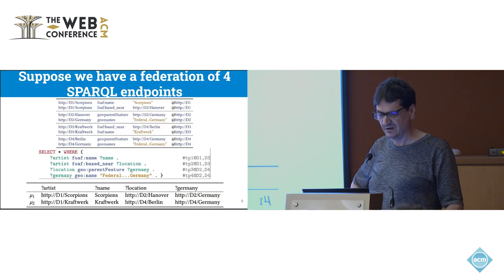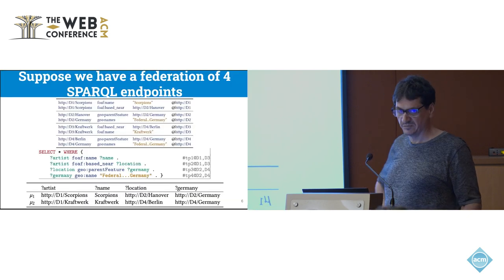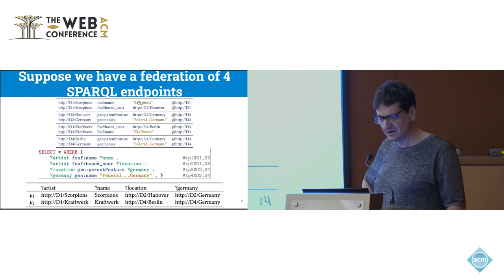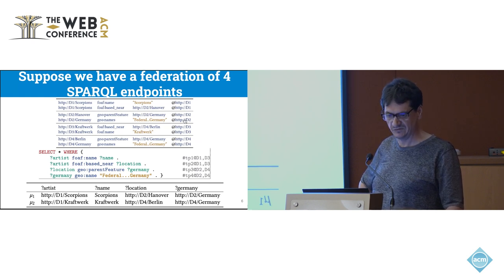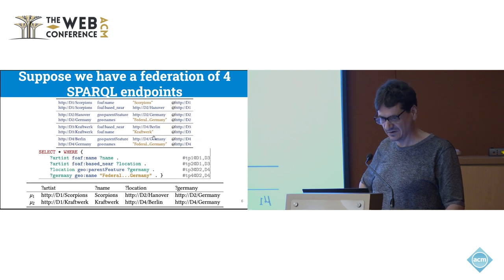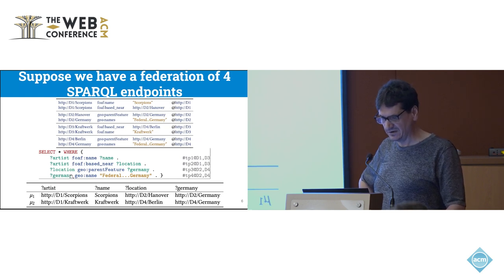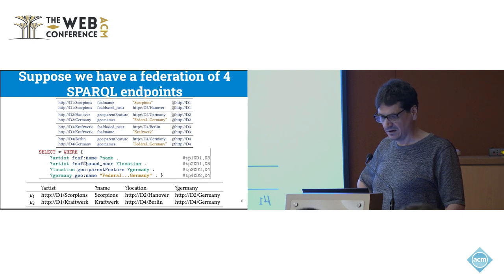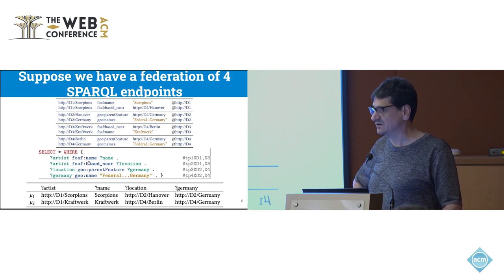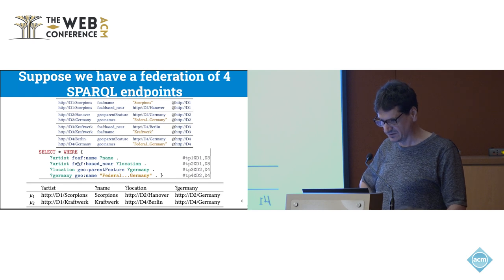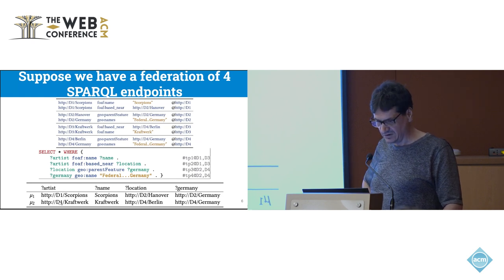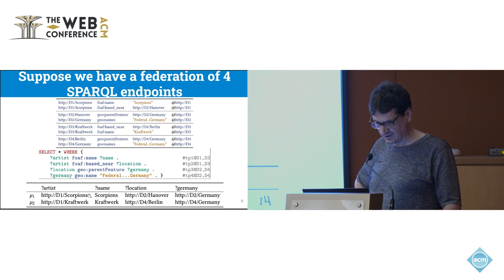I will explain you all of that in a super simple example. Here you have four endpoints: D1, D2, D3, D4, with just two triples per endpoint. And you have this query. The query is selecting German music bands over this virtual knowledge graph. And there are two answers: Scorpion and Kraftwerk.